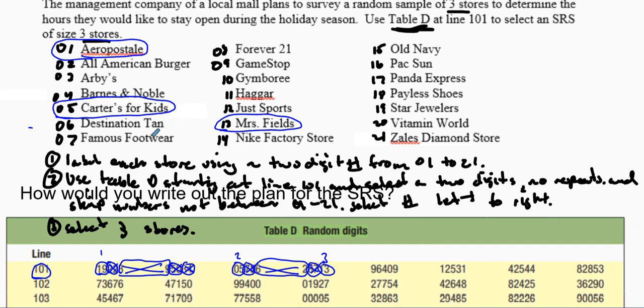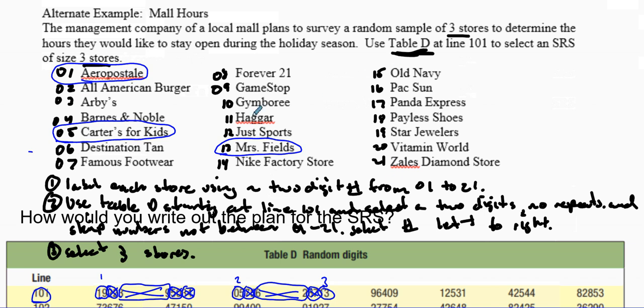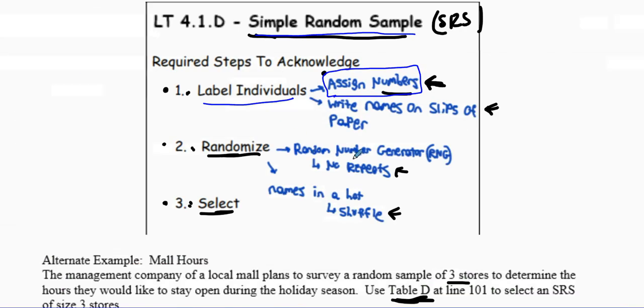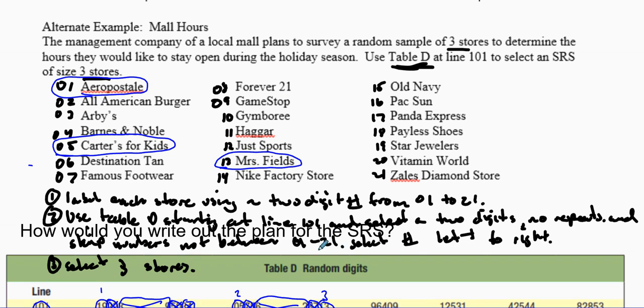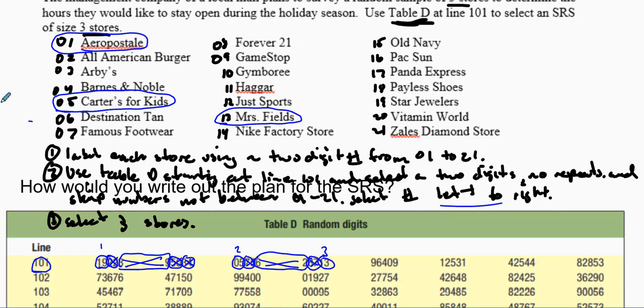That's how you perform a simple random sample. Make sure that you label individuals—assign numbers and write them, or put them on specific paper. In this case we assigned numbers. Be specific on the numbers you're going to assign with two-digit tables. Depending on the number of values, you either want to do a single digit, two digit, or three digit number. If you're just doing a simple random number generator, you can just do one to twenty-one. Always mention that you don't want to have any repeats. You do want to state you want to skip over numbers that are not between these values, especially when you do random number with the table left or right. State how you're selecting and which numbers you are selecting from there. Label, randomize, select—make sure you remember that. I hope this helps you out in doing your simple random samples and setting that up. Good luck, God bless the rest of your problems.